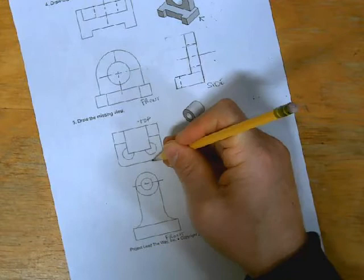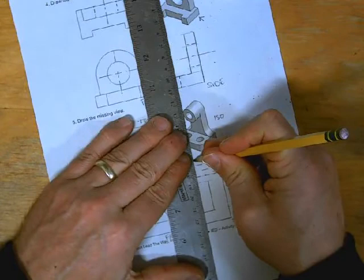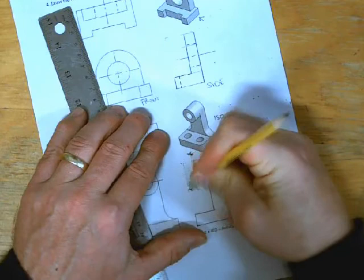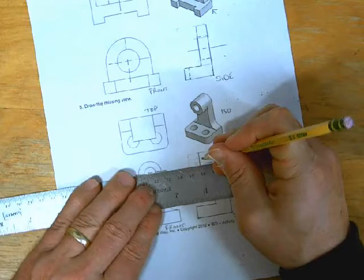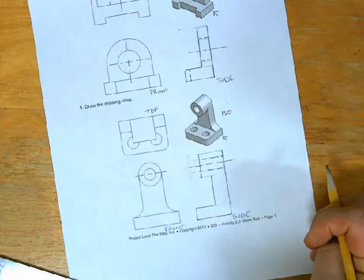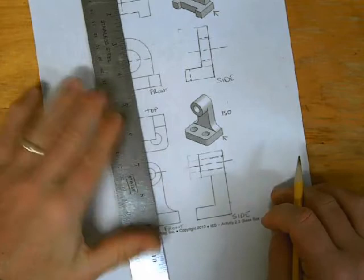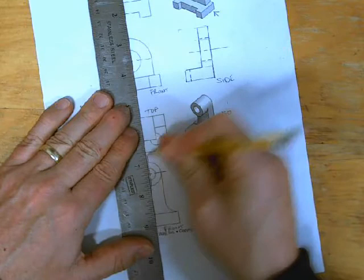All right, you notice how this doesn't go all the way to the edge. This only goes to about here. Luckily I did this with pencil. I can erase this. Whew! Crisis averted. All right, let's continue. Center line going through the front view of this circle, as well as the top view.